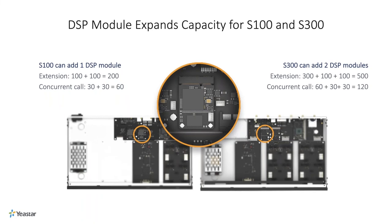Another flexibility on our Yeastar system is the DSP module, available on the S100 and S300. If you want to change the system capacity, you can take this module and fix it in your system. For the S100, you'll be able to have a maximum of 200 users plus 60 concurrent calls with one additional DSP module. For the S300, by default you have 300 users with 60 concurrent calls. If you want to expand the capacity, you can take two DSP modules and have a maximum of 500 users with 120 concurrent calls — that's the maximum capacity of the S300 PBX.